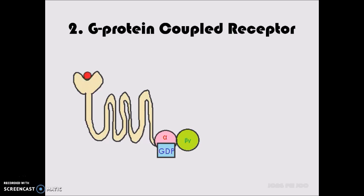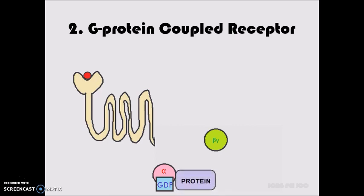When a ligand binds to the receptor, the GTP displaces the GDP which is binding to the alpha subunit. Alpha subunit is dissociated from the receptor and beta, gamma subunits. The alpha subunit together with GTP interacts with the target protein and elicits cellular response.